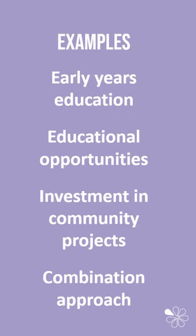Some examples of social and community prevention schemes that have targeted crime include early years education, for example the Perry Preschool Project in the United States. Other schemes include increasing educational opportunities for young people. There has also been an investment in community projects such as millennium centres.